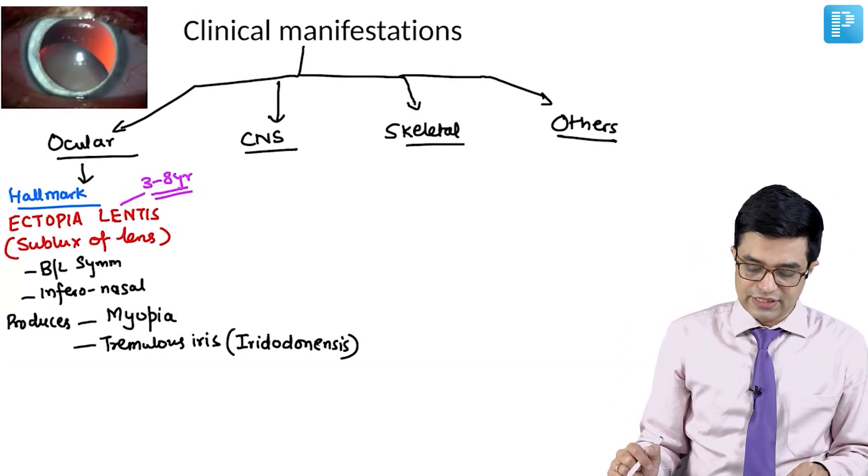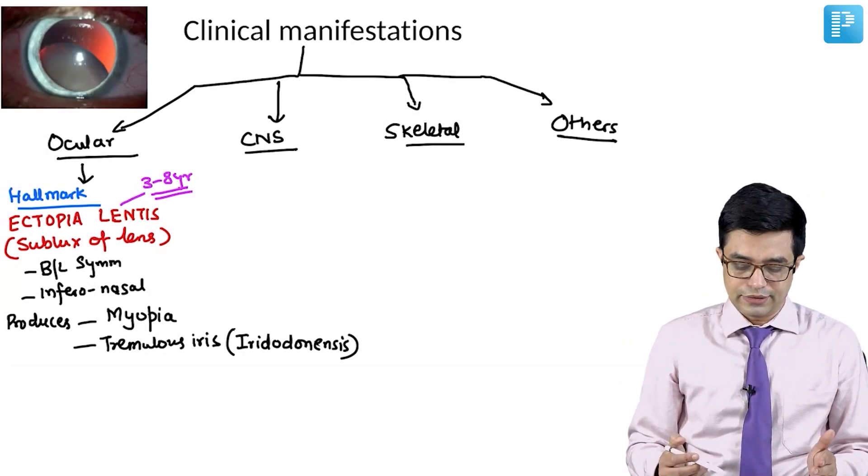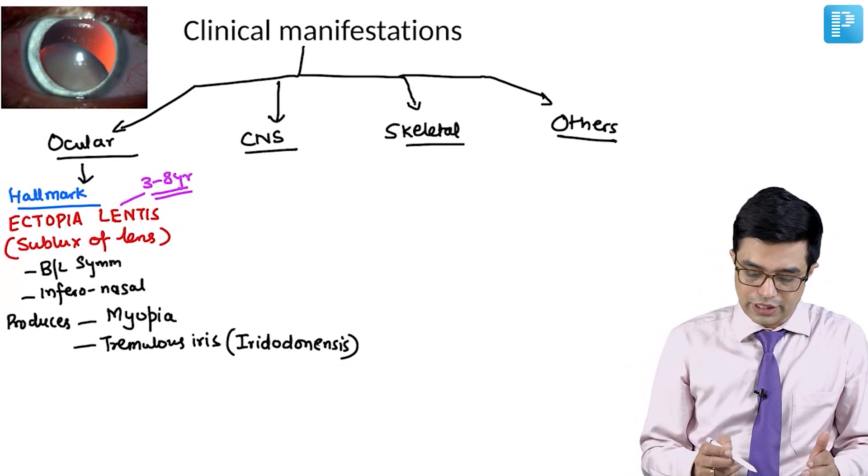If I have to show you a picture, this is how the ectopia lentis in homocystinuria looks like.